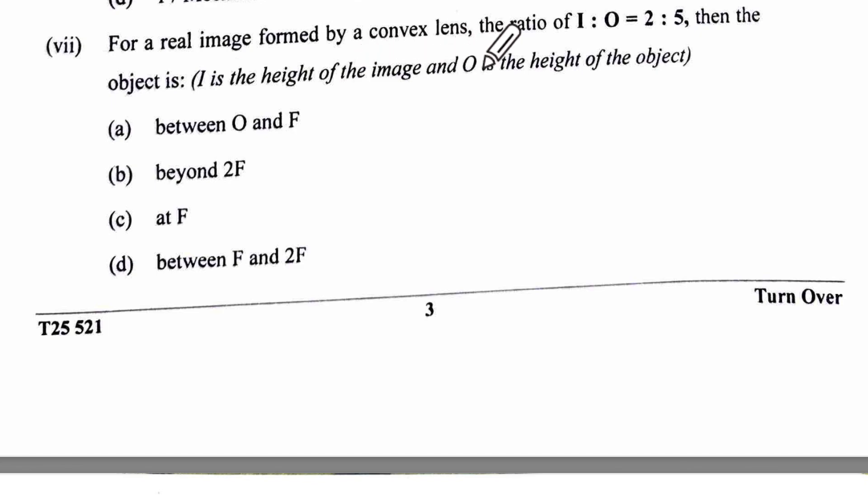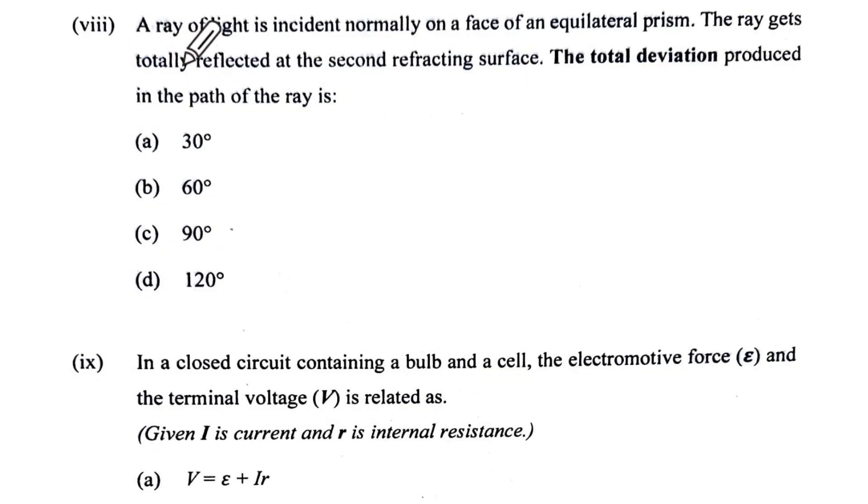For a real image formed by a convex lens, the ratio of image upon object, which is magnification, is 2 is to 5. If your magnification is less than 1, then the object is not between O and F. Beyond 2F is the correct one. Between F and 2F it will be enlarged image, so it will be beyond 2F. That is option B.